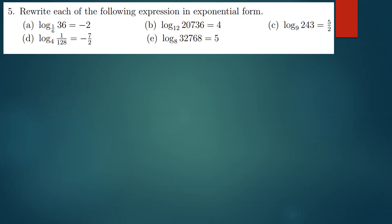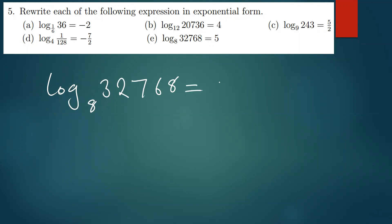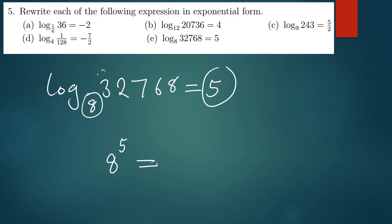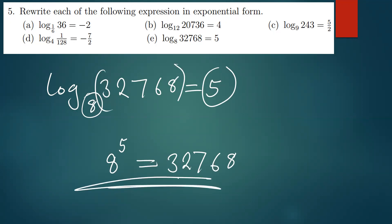The same applies to the last part — we follow the same procedure. We have the log of 32768 with base 8 being equal to 5. Converting is simple: take the base as the base in exponential, the power is 5, and this equals 32768. Do we have any questions on the questions we've covered?